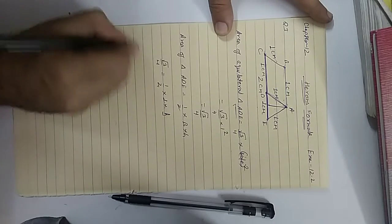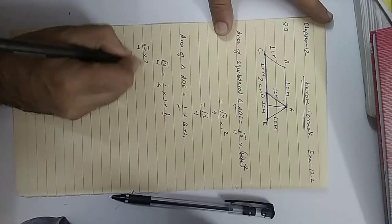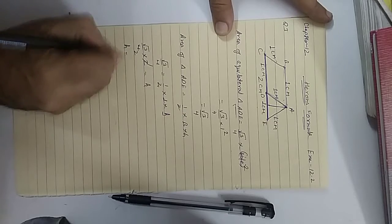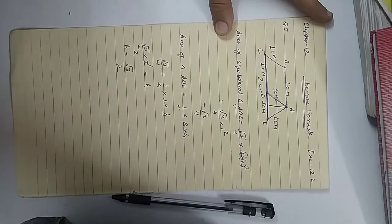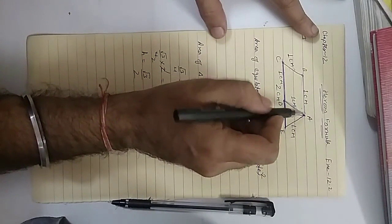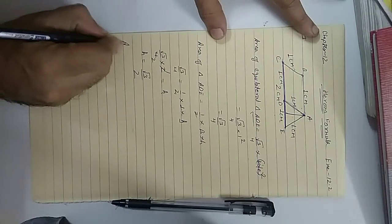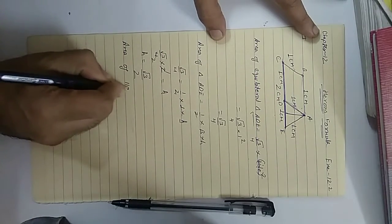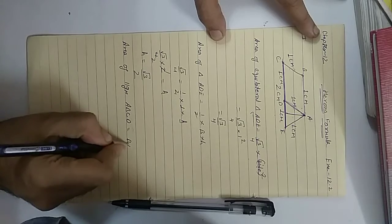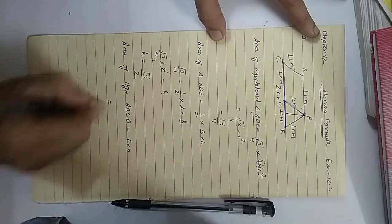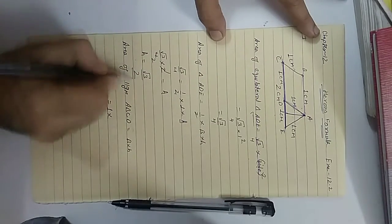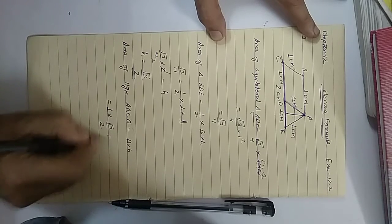We already found the area of triangle ADE is root 3 by 4. So: root 3 by 4 equals 1 by 2 into base (1 centimeter) into height h. Solving: root 3 by 4 into 2 equals h, so height equals root 3 by 2. Now, area of parallelogram ABCD equals base into height equals 1 into root 3 by 2, which gives root 3 by 2.